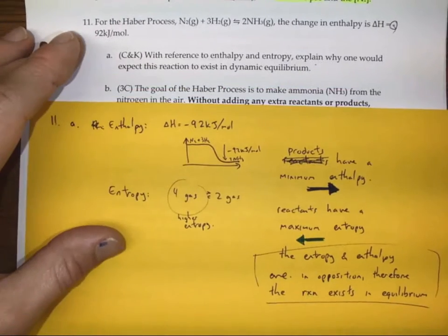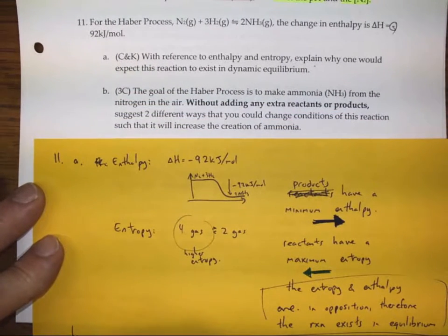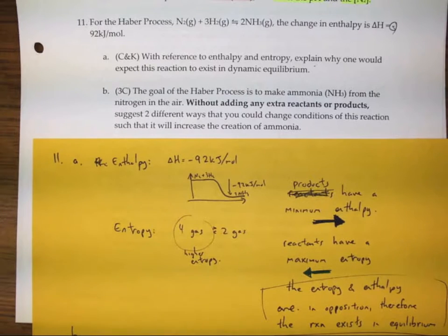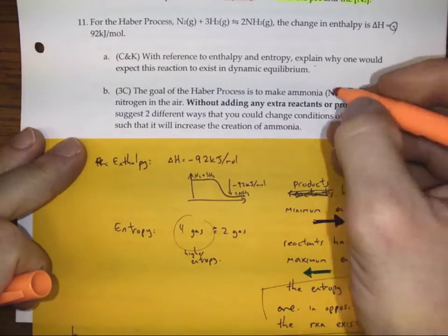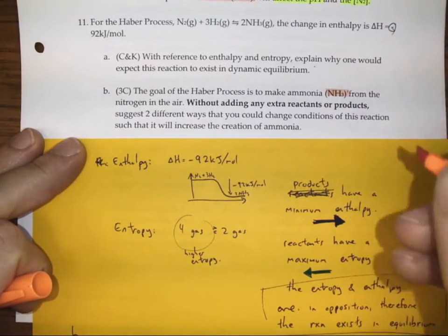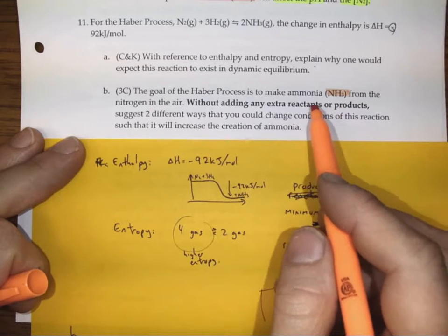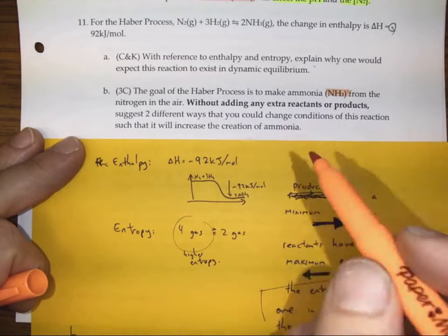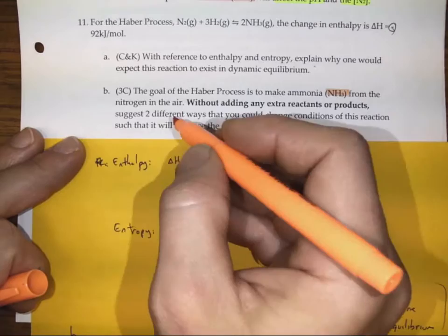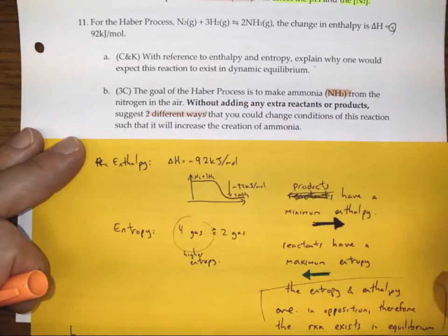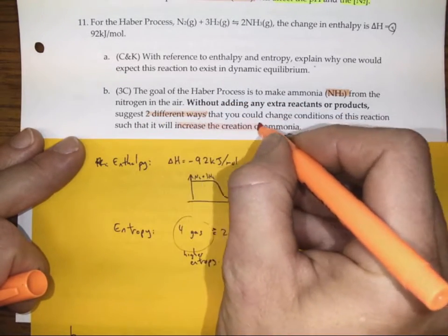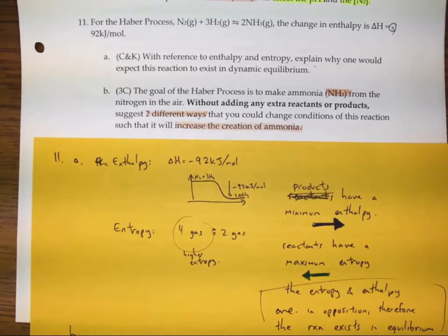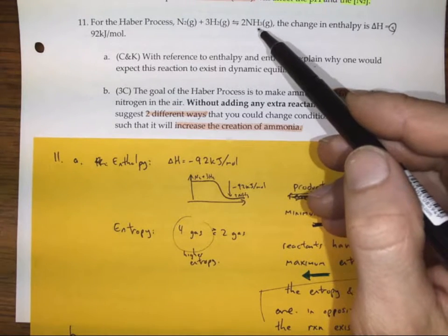Moving on to question 11B. The goal of the Haber process — which is this reaction — is to make ammonia, because we use it for fertilizer, from the free nitrogen gas in the air. So if we're not adding any extra reactants or products, can we suggest two different ways to change conditions so we'll increase the creation of ammonia? How can we shift equilibrium so that more ammonia is created?